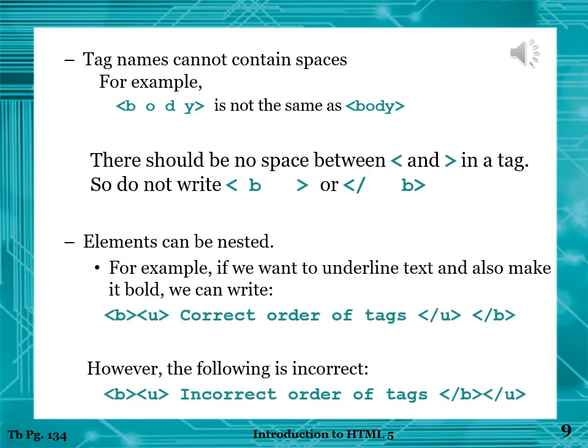Tag names cannot contain spaces. For example, body written with spaces is not the same as body without spaces. There should be no space between the angle brackets in a tag — do not write angle bracket, space, B, or angle bracket, slash, space, B. Elements can be nested. For example, if we want to underline text and also make it bold, the correct order is: bold tag, underline tag, the statement, then close the underline tag first, and then close the bold tag. The tag which is opened first is closed last — like brackets in maths.